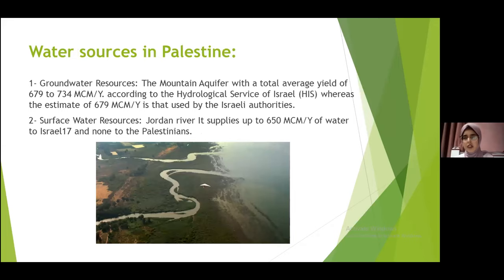For the sources of water in Palestine, there are two important sources. The first is the groundwater resources, represented by the mountain aquifer, with a total average yield of 679 to 734 MCM per year. The second source is the surface source, represented by the Jordan River, which supplies up to 650 MCM of water per year.